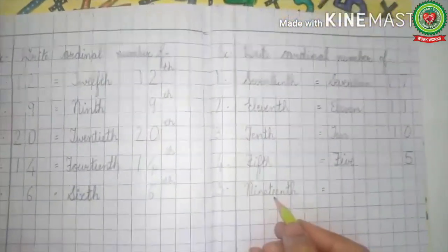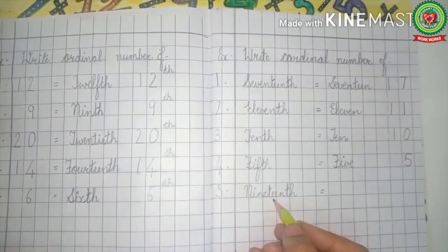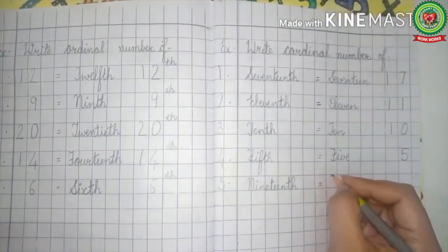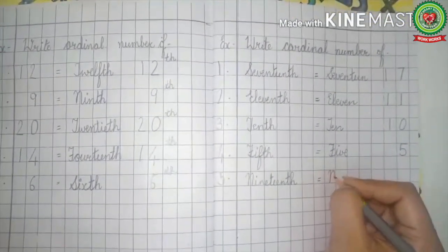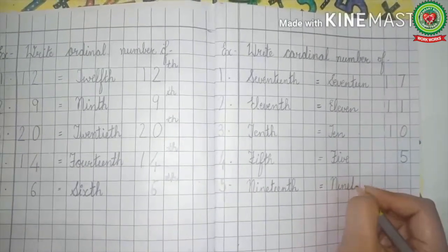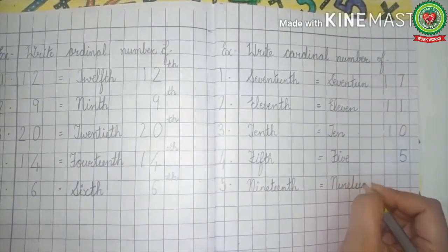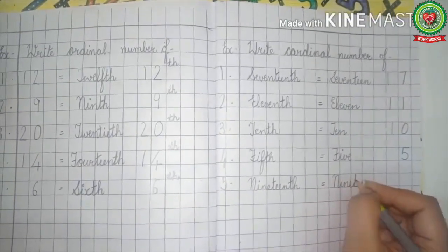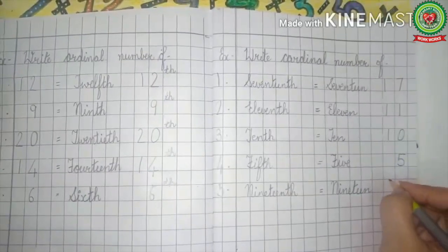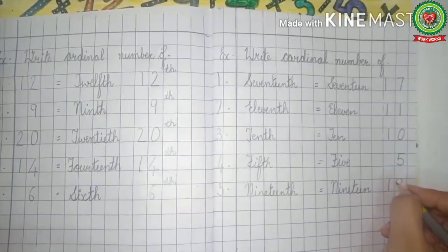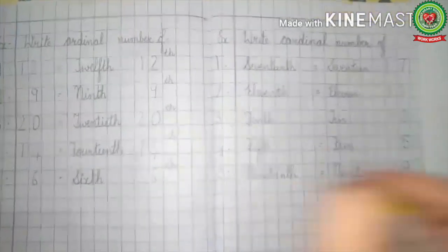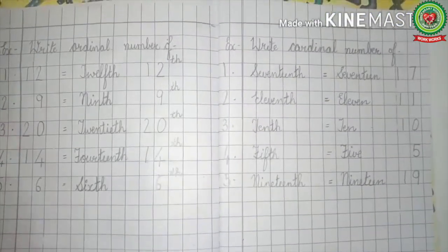Next is 19th. The cardinal number of 19th is 19. Spell it: N-I-N-E-T-E-E-N — 19. And we can write 19 in numbers also, like 19.